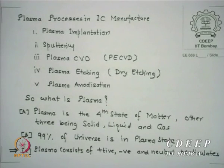What is plasma? Plasma is actually the fourth state of matter — 99% of the universe is in this state, yet we hardly discuss it. Plasma consists of electrons, ions, and neutrals, but the critical point is that plasma is charge neutral. The net charge is zero; charge neutrality always holds even though there are negative electrons, positive ions, and neutral particles.